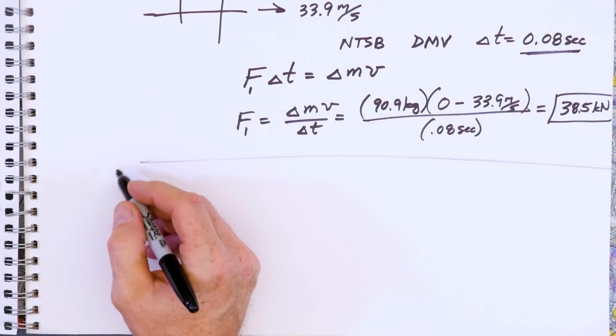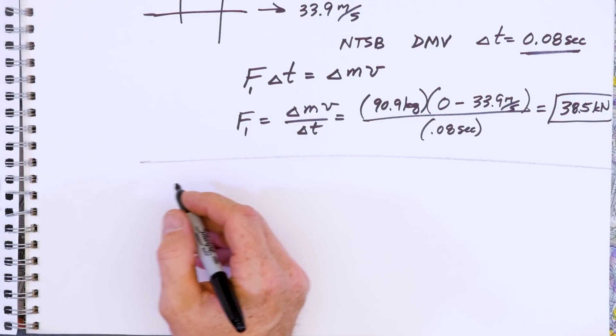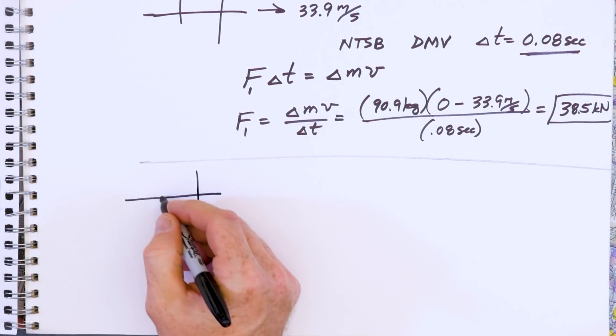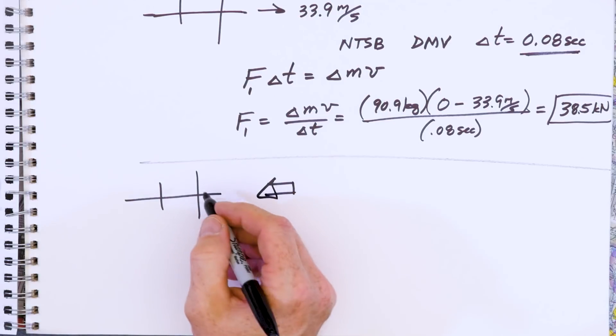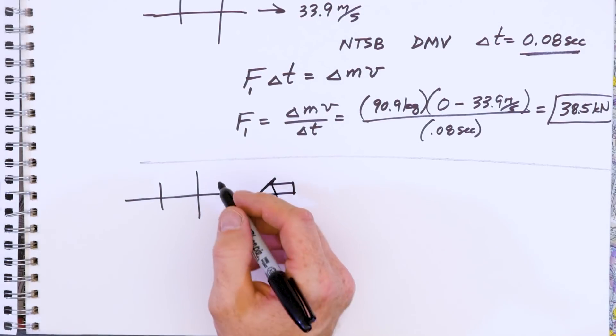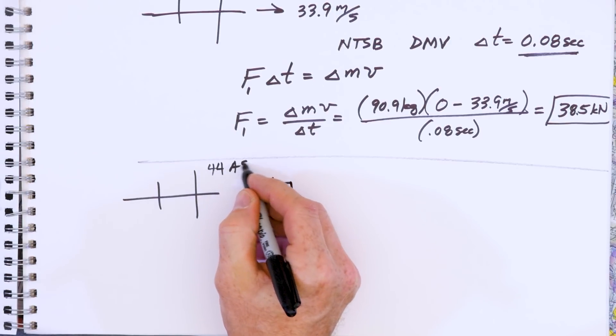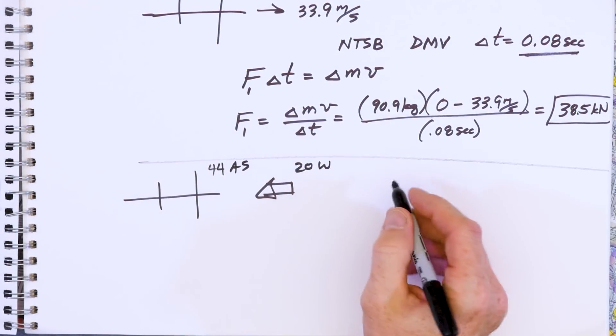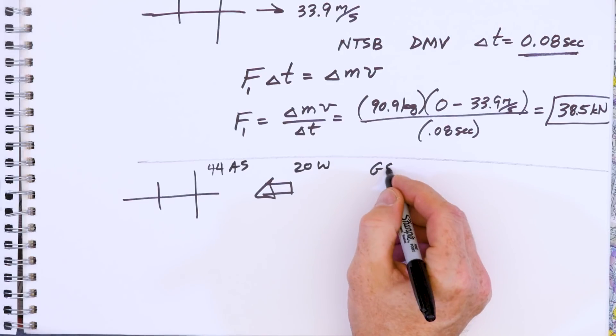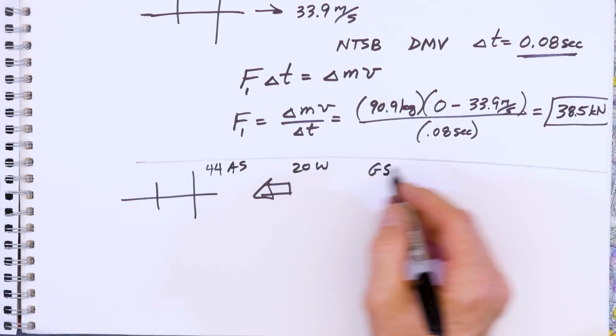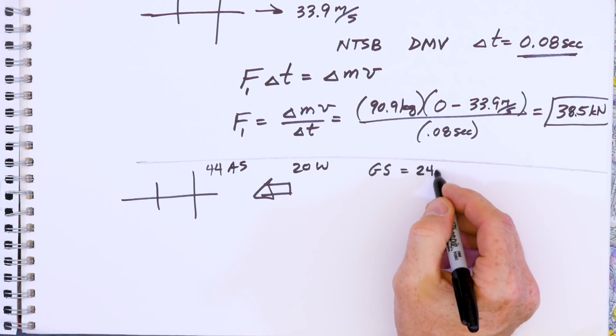So now we do the next one. Number two for the pilot that lands with the proper headwind. And this calculation we already did in video number four or three, we had 44 knots airspeed, 20 knots wind. So we subtract the two now and that gives us a ground speed of only 24 knots over the ground as you land.